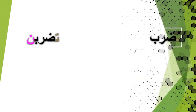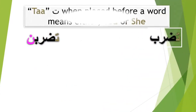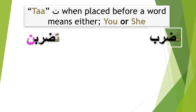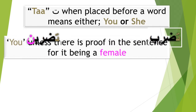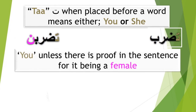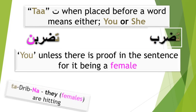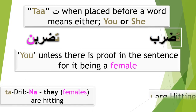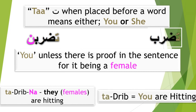The letter ت must be the most confusing for most people. When placed before a word, it can mean either 'you' or 'she.' It will normally mean 'you' unless there is proof in the sentence that it refers to a female. For example: تضربن — they (females) are hitting. تضرب — you are hitting.